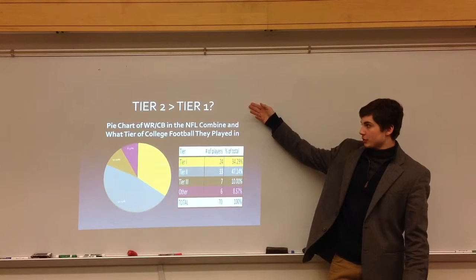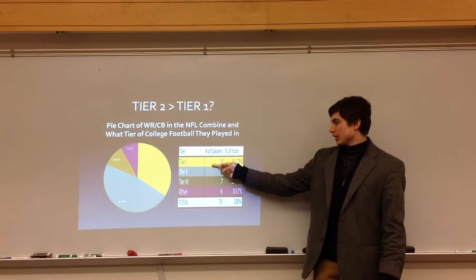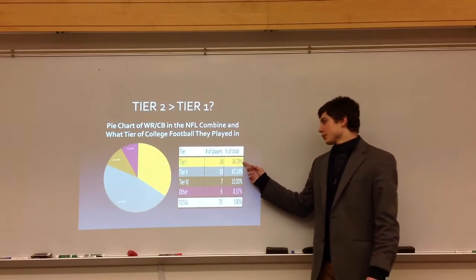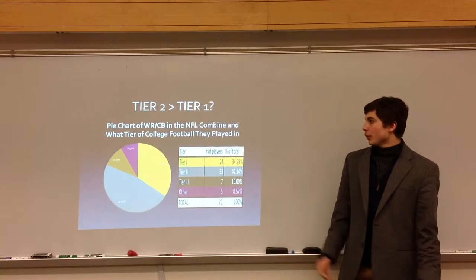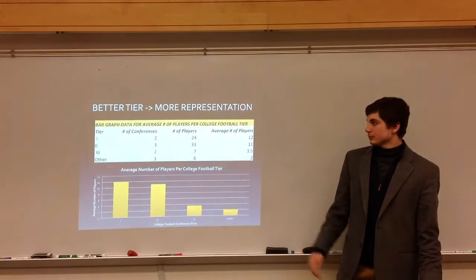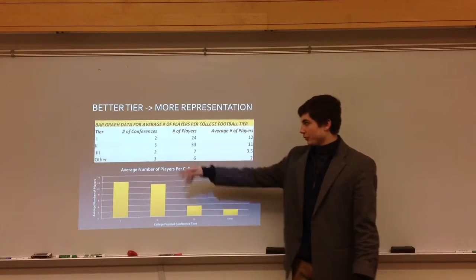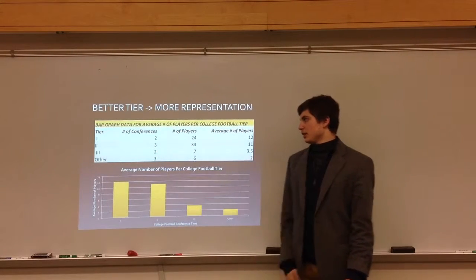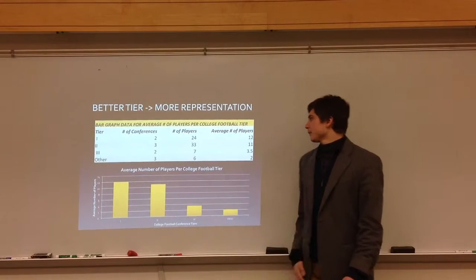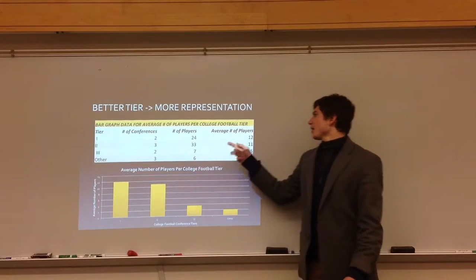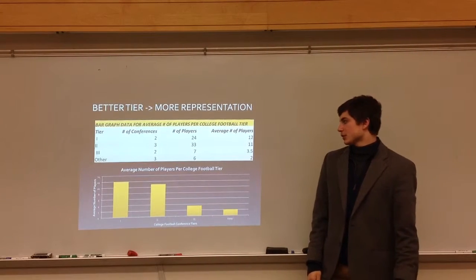Tier 2 is not better than Tier 1 — I evaluated this. Tier 2 has 33 players while Tier 1 has 24, so the percentage of the total is skewed by that. That's why it looks like Tier 2 has more players. If you look at it by number of conferences per tier: Tier 1 is the SEC and Pac-12; Tier 2 is Big 10, Big 12, and the ACC. You take the number of players and divide by the number of conferences to get an average per conference. The bar graph shows Tier 1 has the most players per conference.